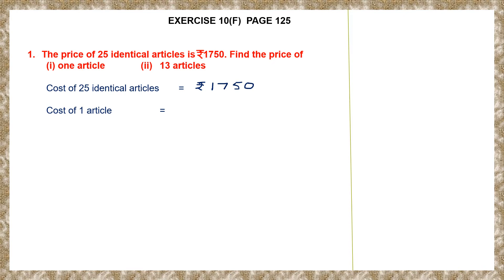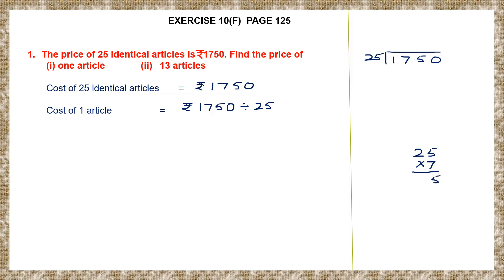Now, we have to find the cost of one article. To find the cost of one, we need to do division. That is, we will divide Rs. 1750 by 25. When we divide it by 25, we will know the value of one article. So, 1750 divided by 25. Let's multiply 25 into 7: 7 fives are 35, carry 3; 7 twos are 14, 15, 16, 17. That's 175. So, 25 into 7 is 175. Subtract, bring down the 0, and the remainder is 0.